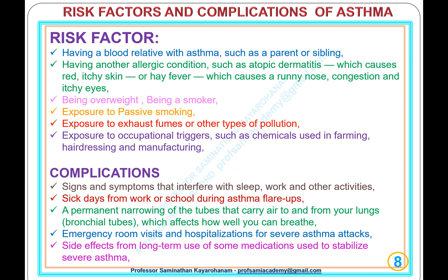Risk factors and complications of asthma. Risk factors include: having a blood relative (parent or sibling) with asthma; having another allergic condition such as atopic dermatitis or hay fever; being overweight; being a smoker; exposure to passive smoking, exhaust fumes, or other pollution; and exposure to occupational triggers such as chemicals in farming, hairdressing, and manufacturing. Complications include: symptoms interfering with sleep, work, and other activities; sick days from work or school during flare-ups; permanent narrowing of the bronchial tubes affecting breathing; emergency room visits and hospitalizations for severe asthma attacks; and side effects from long-term use of medications to stabilize severe asthma.